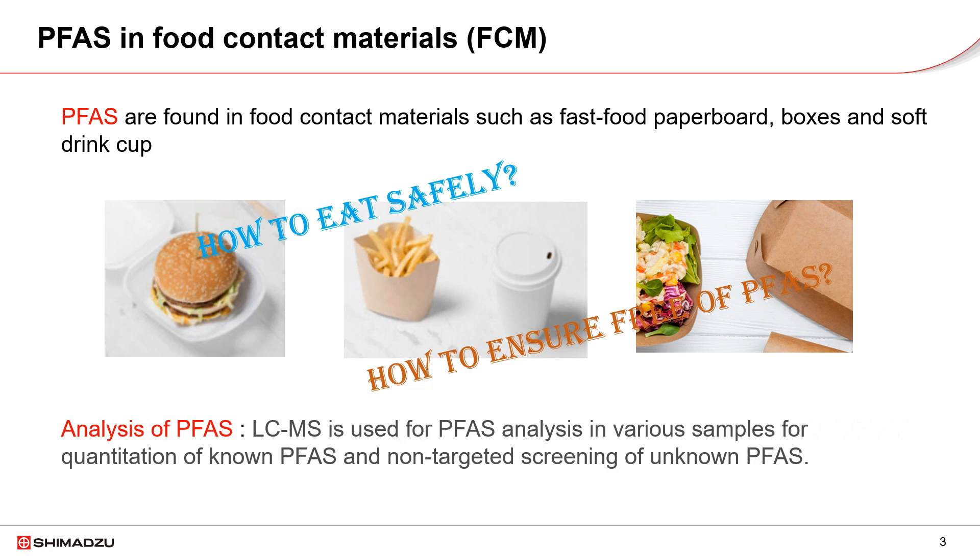Targeted and non-targeted screening analysis have been used for analysis of known and unknown PFAS. LC-MS is the method of choice for screening and quantitation of PFAS due to high sensitivity, superior selectivity and identification. There are two types of analysis methods: targeted screening and non-targeted screening.